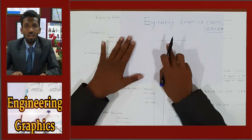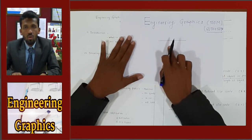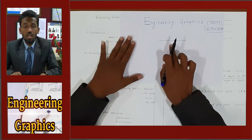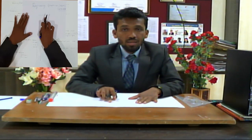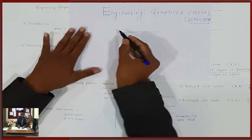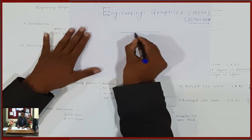Lines are classified into types such as continuous thin lines, continuous thick lines, and other line types.